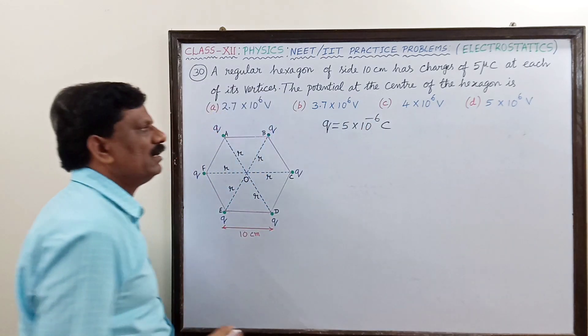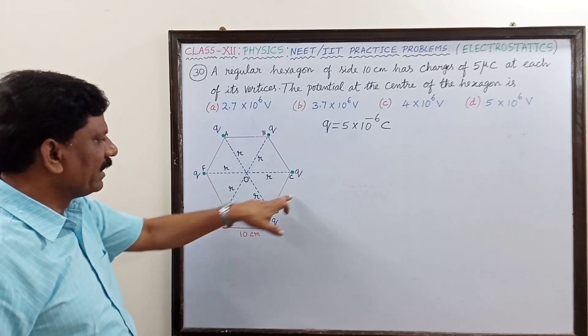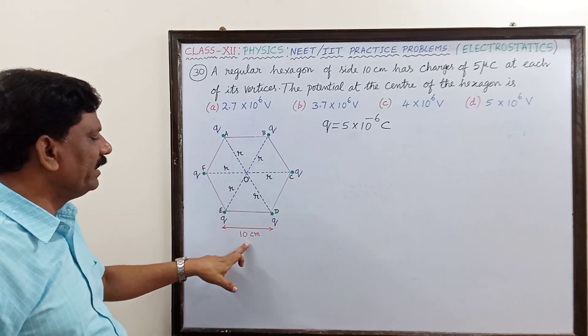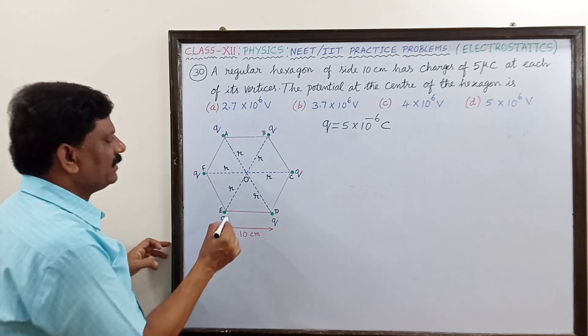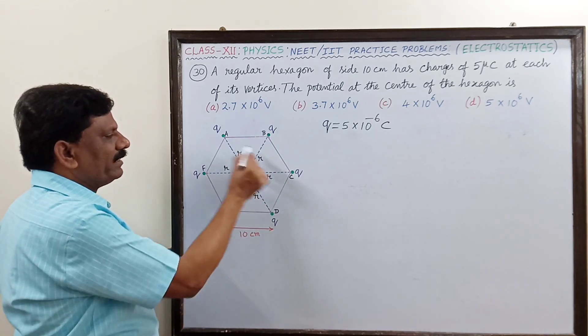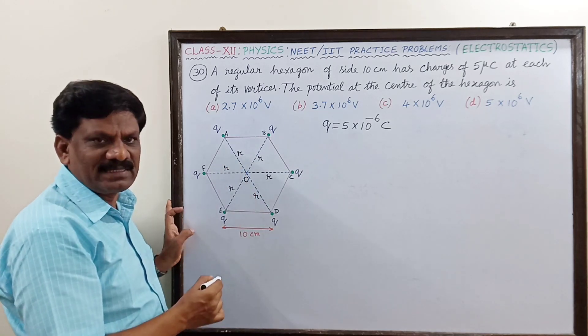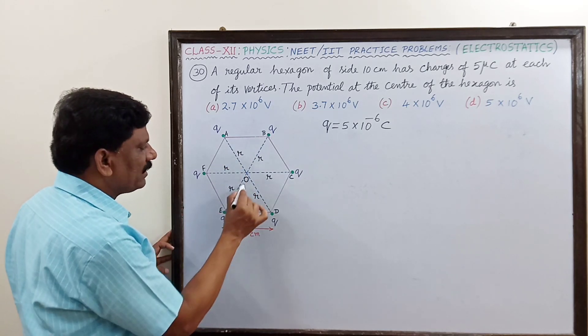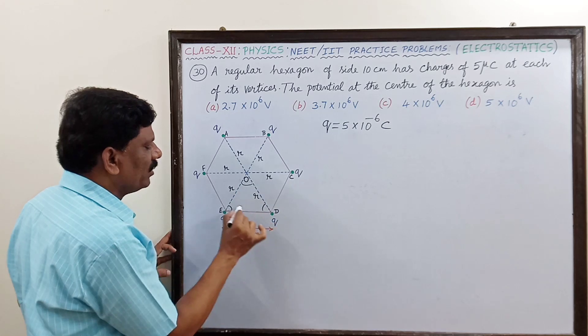Now it is a regular hexagon. Each side length is 10 centimeter. Also you see that six equilateral triangles will be formed inside a regular hexagon. Therefore all these angles are equal and that is equal to 60 degrees.